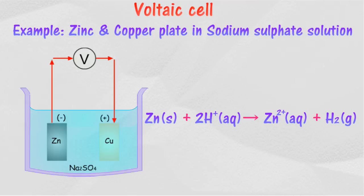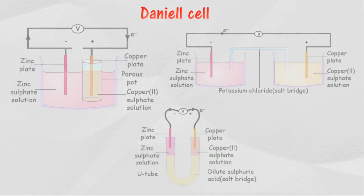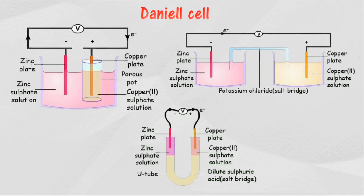Daniel cell is also known as galvanic cell, which uses the same working principle as a voltaic cell. It converts chemical energy to electrical energy. Daniel cell is part of a battery consisting of two metals joined by a salt bridge or a porous pot.